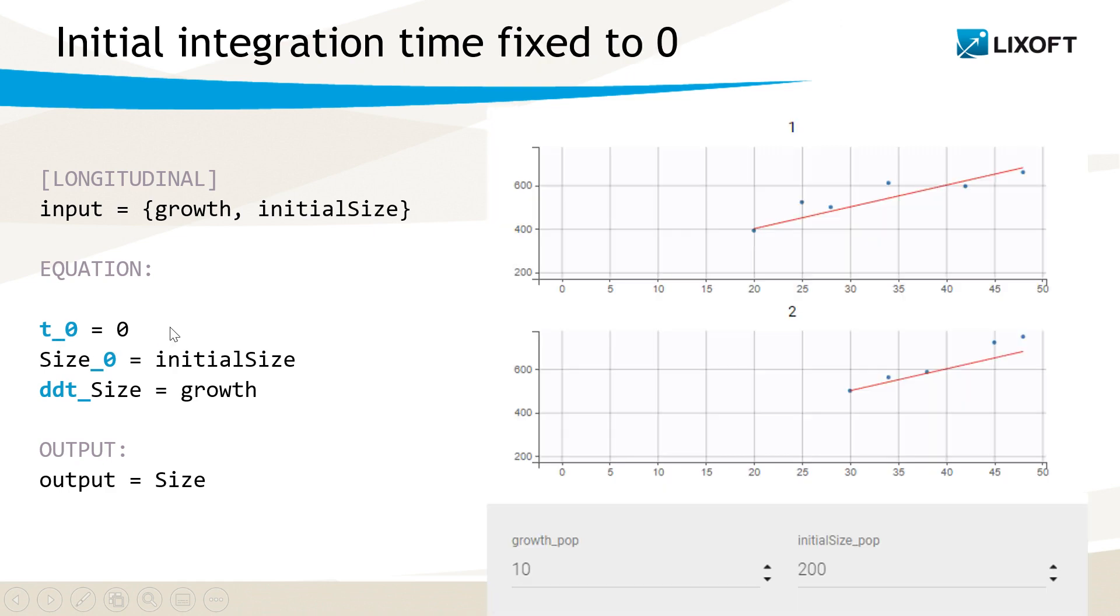Here is an example of two predictions in Monolix based on this tumor size model and the population parameter values. The plots in the initial estimates tab as well as the individual fits show the prediction starting at the time of the first record from the data for each individual, so the first dose or the first observation, whatever comes first.